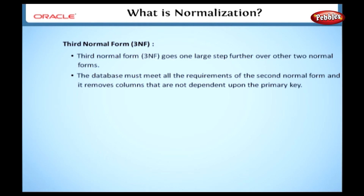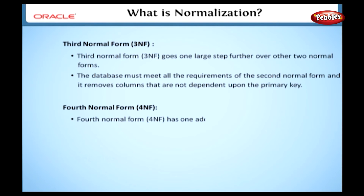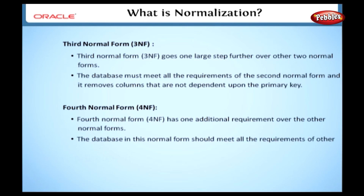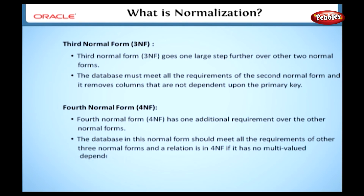We will see this in detail in upcoming lessons. The fourth normal form, 4NF, has one additional requirement over the other normal forms. The database should meet all the requirements of the other three normal forms, and a relationship is in 4NF if it has no multivalued dependencies.